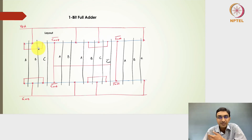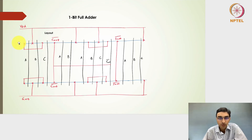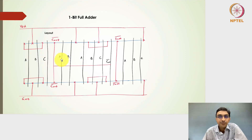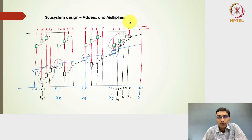This is the stick diagram of the one-bit full adder circuit, which consists of either 32 or 28 transistors. This particular stick diagram has 28 transistors — 14 on the PMOS side and 14 on the NMOS side. We will understand how to draw this stick diagram using P-diffusion lines, N-diffusion lines, and polysilicon lines, and how to come up with stick diagrams for a given logic design.